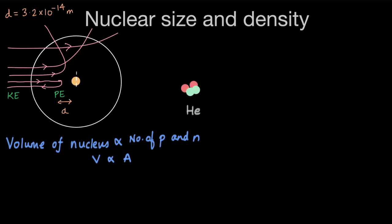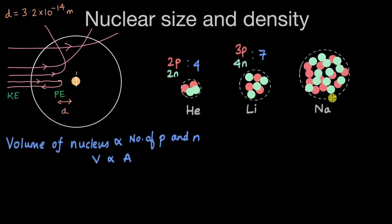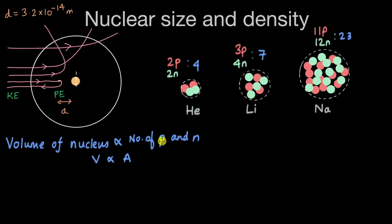This makes sense: if we look at the helium nucleus with two protons and two neutrons, the mass number is four. If we take a lithium nucleus with three protons and four neutrons, the mass number becomes seven. If you fit in more protons and neutrons, they take up more space, so the nucleus gets bigger. For a sodium nucleus with 11 protons and 12 neutrons, the mass number is 23 — more protons and neutrons require a bigger space for all those subatomic particles.